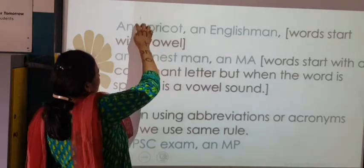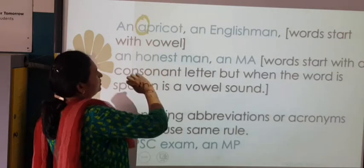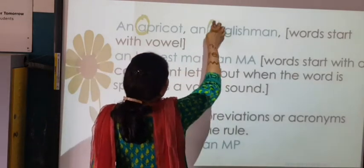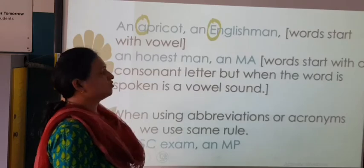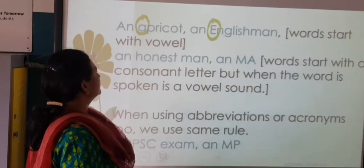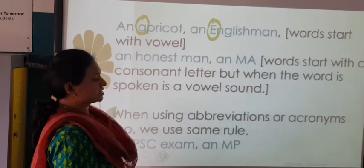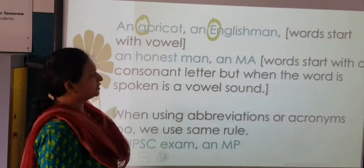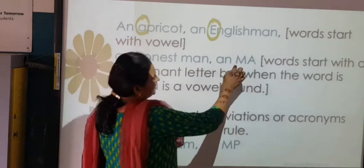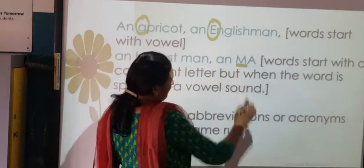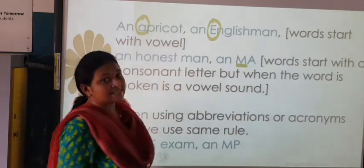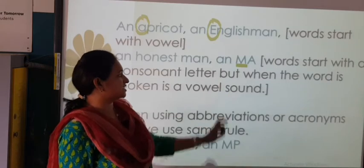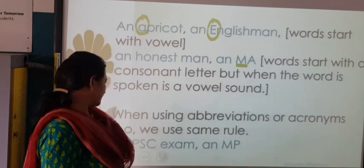An apricot — yes, this is a vowel. An Englishman — words starting with vowel sounds. An honest man — I just gave you that example. An M.A. — here it is actually M, but the sound is coming as 'em', so we will be writing 'an'.